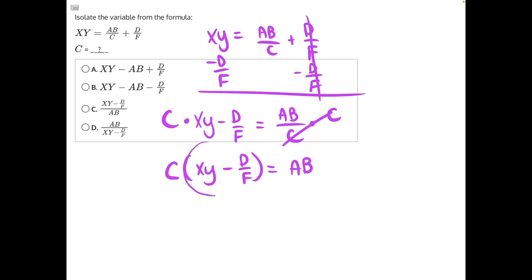So the opposite operation to isolate c would be dividing both sides by this entire set of parentheses.